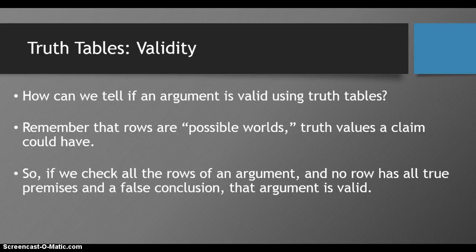How can we tell whether an argument is valid using truth tables? Remember that rows are possible worlds, truth values a claim could have, even if it doesn't actually have one. So if we check all the rows of an argument, and no row has all true premises and a false conclusion, that argument is valid.